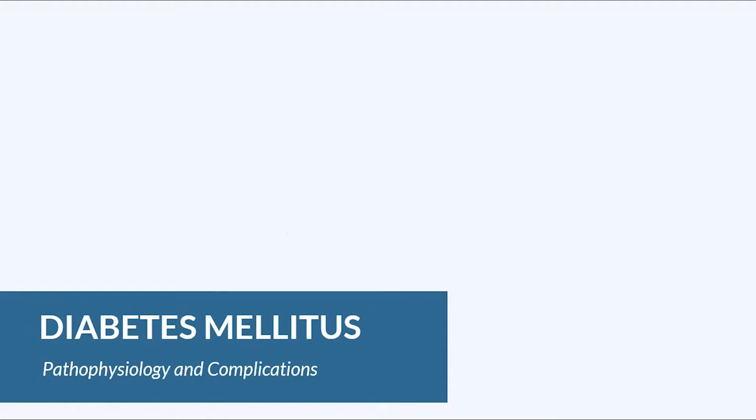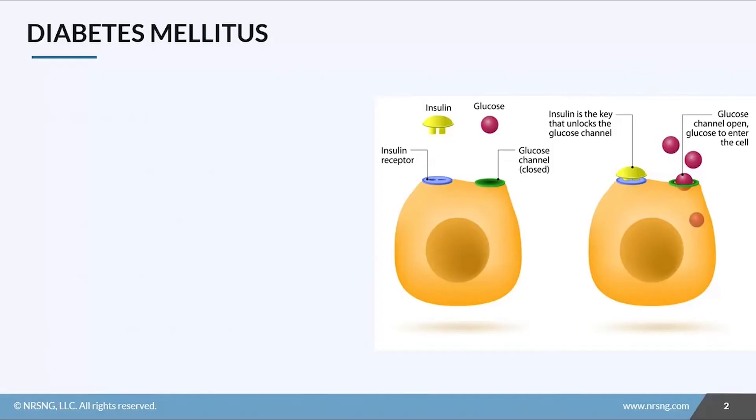We're going to talk about diabetes mellitus. Even if you're brand new into nursing school, you've probably heard about this or you know someone who has it. Diabetes is one of the leading comorbidities in the U.S. and it's a serious problem for our patients. In this lesson, we're going to review what happens in the patient's body with diabetes mellitus, and in the next lesson, we're going to talk about what we do about it medically and in our nursing care.